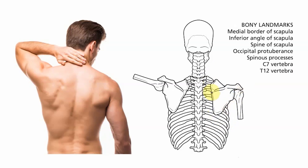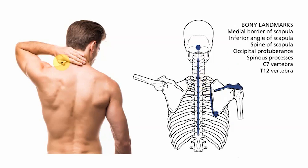We can add our medial border running along here, and at the inferior end of that medial border we find the inferior angle. The spine of the scapula is this large projection that passes from the medial border, heads laterally over the shoulder joint, and finishes laterally as our acromion. The occipital protuberance is the bump you can feel at the back of your head near the base of your skull. Then we have the spinous processes projecting posteriorly from our vertebrae — I'd like to highlight two in particular: our last cervical vertebra C7, which you should be able to feel as a prominent bump, and our final thoracic vertebra T12 down here.